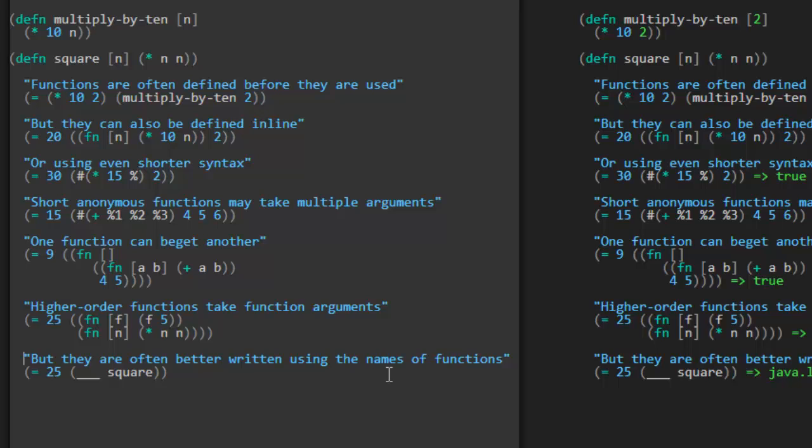Okay. So, but they are often better written using the names of functions. Huh. 25 square. Oh, I guess we can write the same thing that we did already. fn f, and 5. Right? So, we take... We're expecting a function as a parameter. And we're going to apply that function to the number 5. So, in this case, square was passed as our function. And we applied it to 5. And it returns 25. Cool.